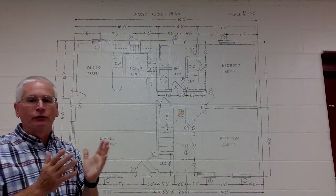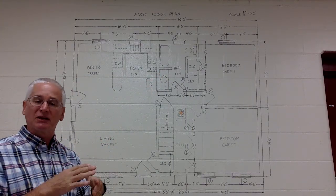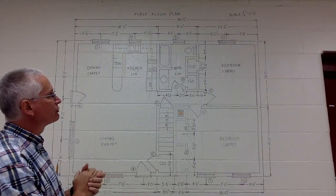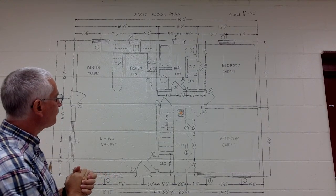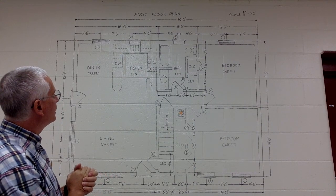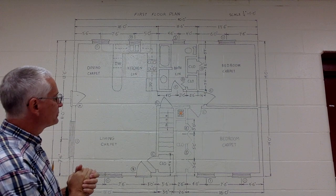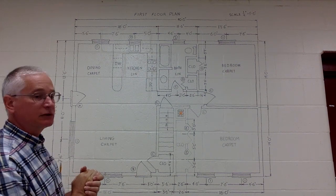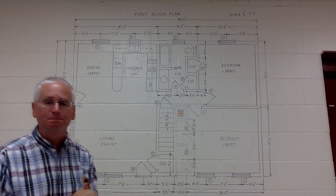Obviously this house at 40 feet in length couldn't fit on a piece of paper, so it's scaled down — each quarter inch represents one foot. That's pretty much everything you need to see on the floor plan.